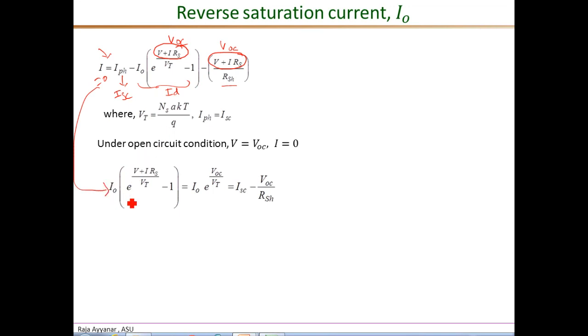From that we get this expression, where we see that this diode current I-D, which is I-O times, in this expression, the first term, the exponential term is extremely large compared to 1. This is in the order of 10 to the 9 or so, so 1 can be very easily neglected. The diode current, therefore, is I-O times e to the V-OC over V-T.